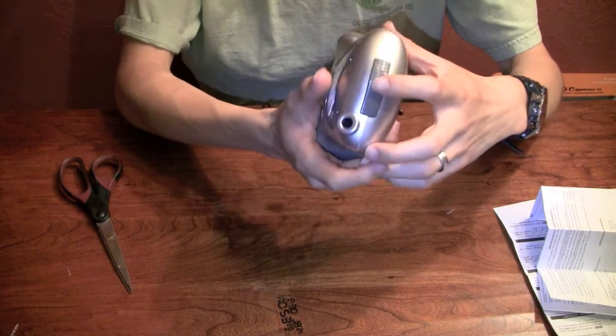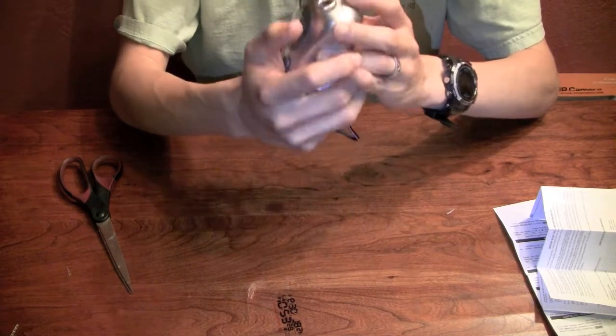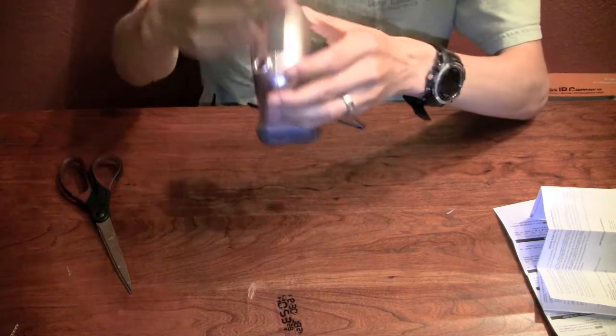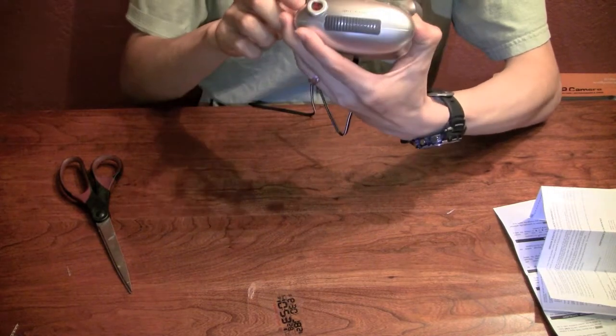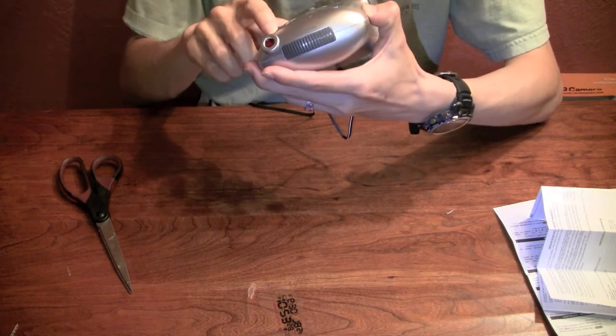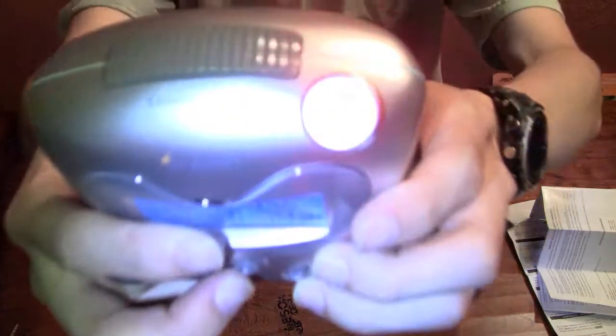Snooze and light buttons right here. Projection on, okay. I don't see anything on the wall. I just see a little dot. I wonder if you can adjust the focus on this thing.